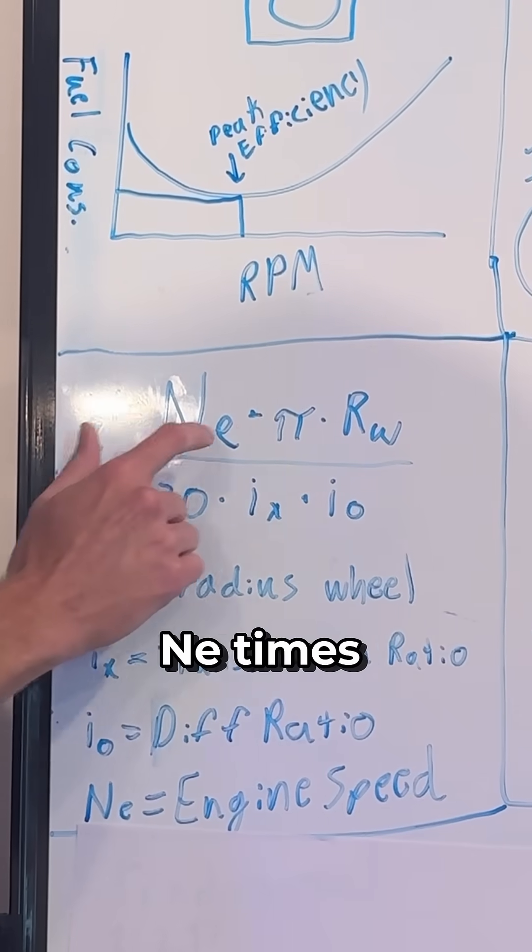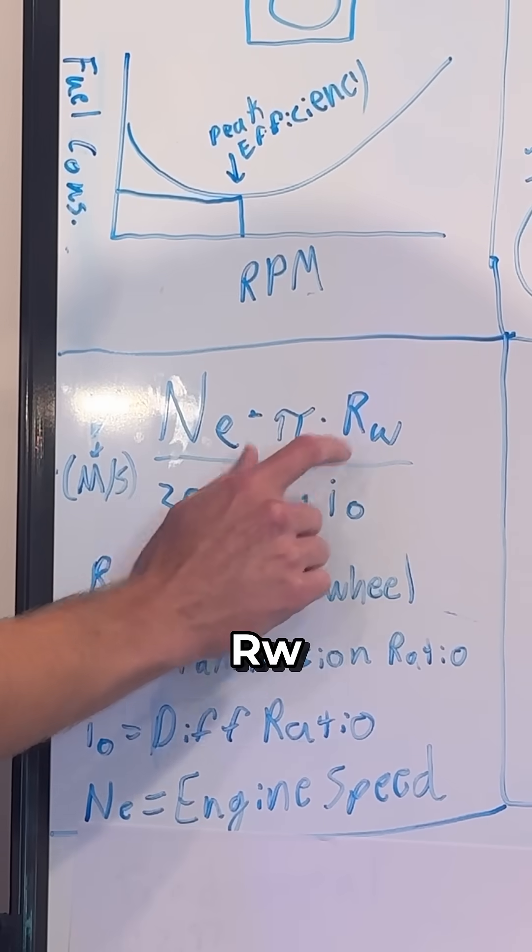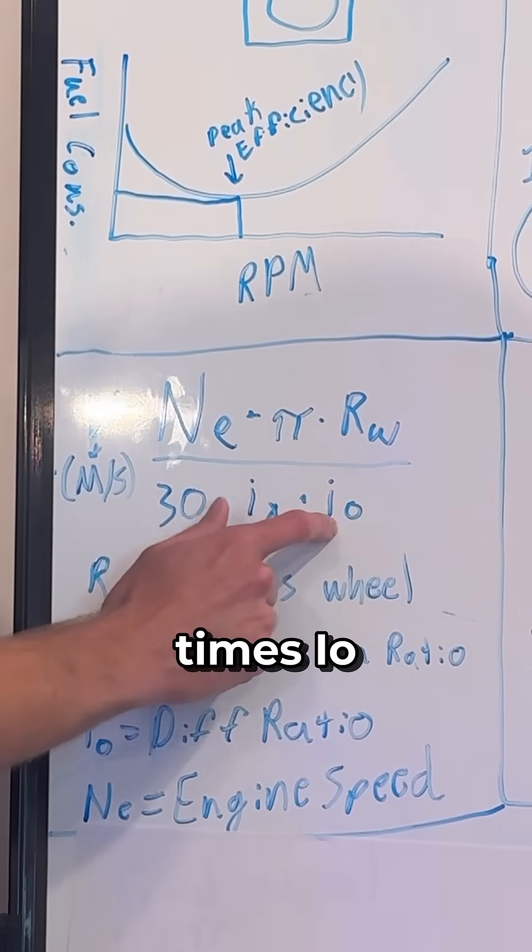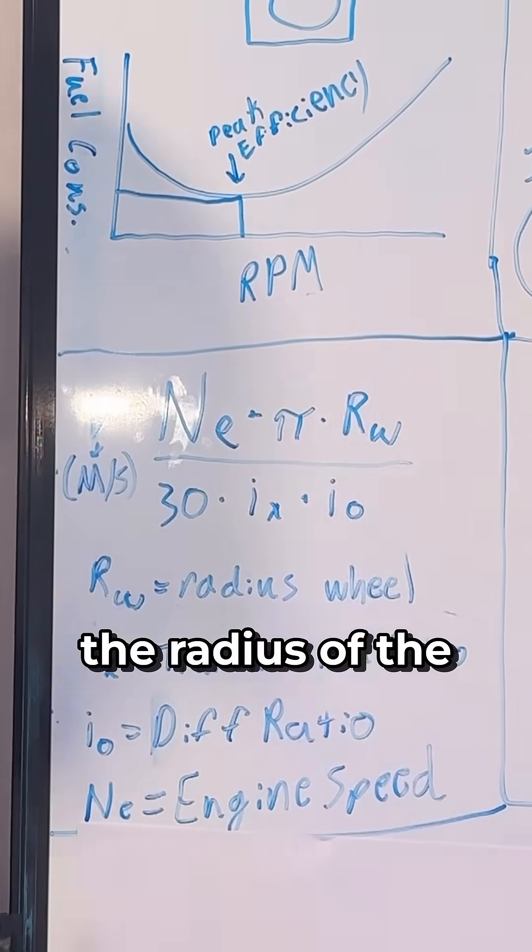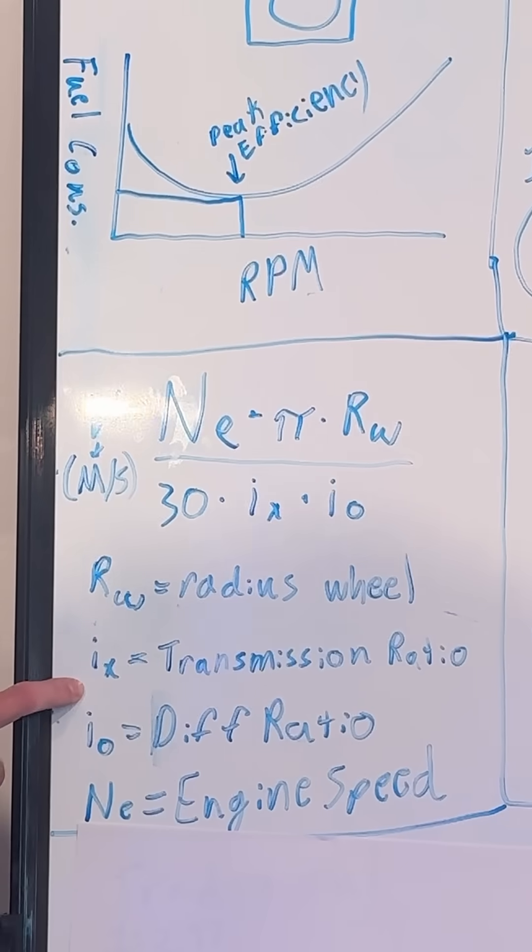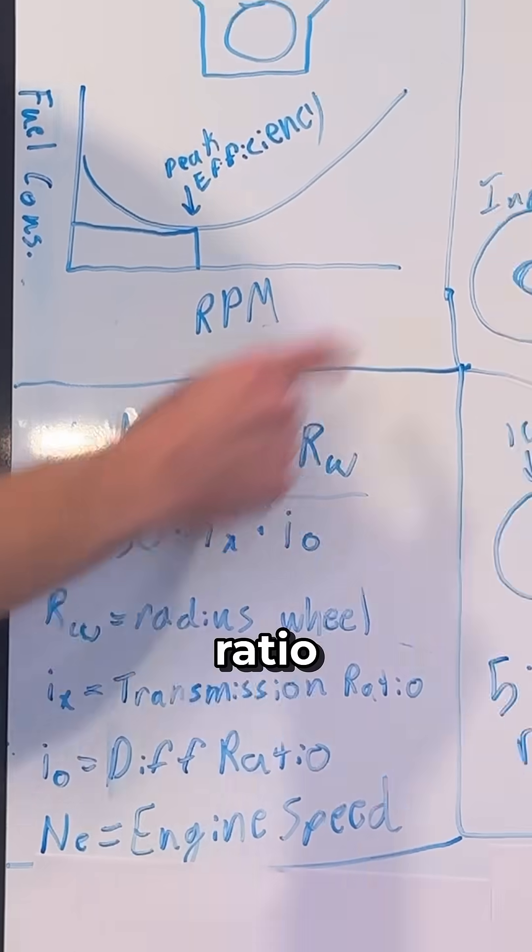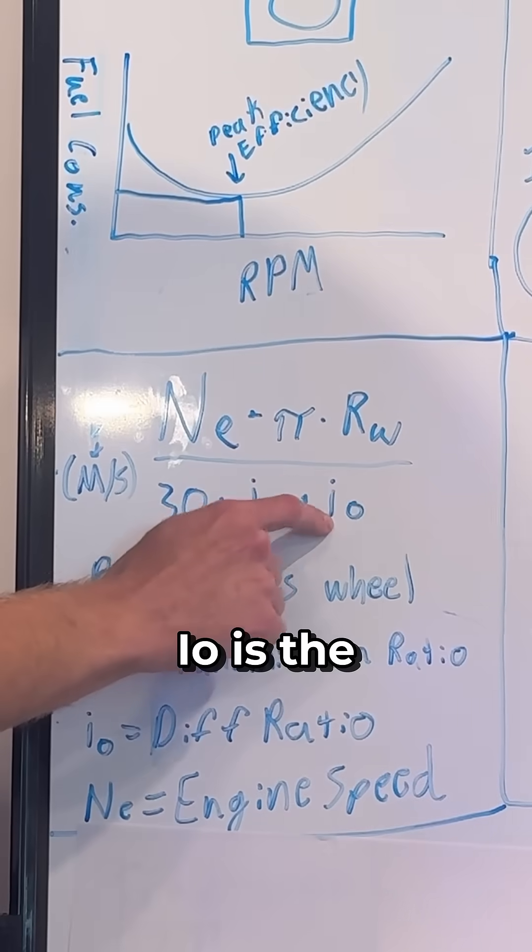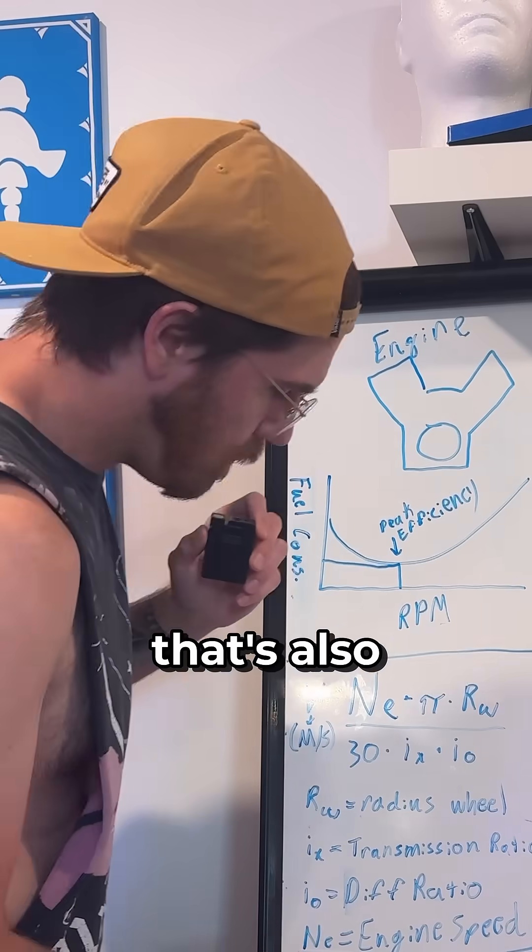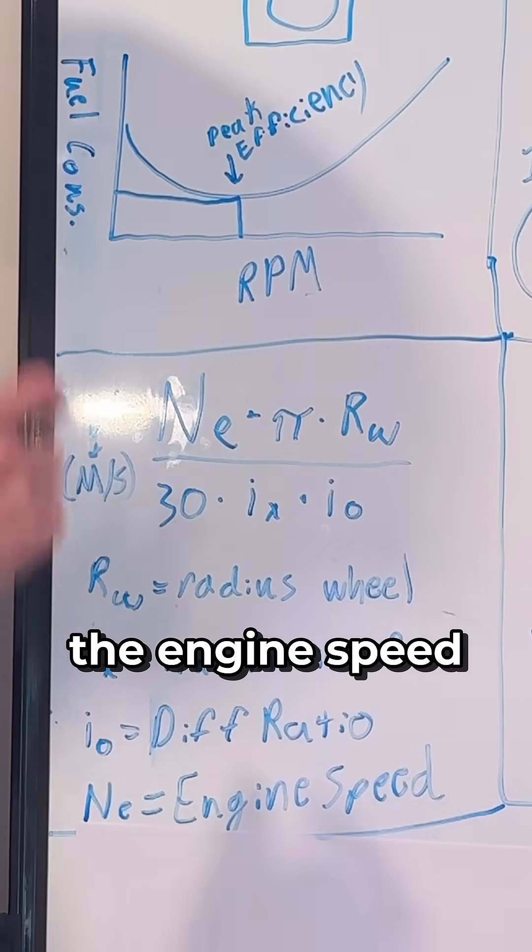Velocity equals ne times pi times rw divided by 30 times ix times io, where rw is the radius of the wheel, something that is fixed. ix is the transmission ratio. io is the differential ratio, something that's also fixed, and ne is the engine speed.